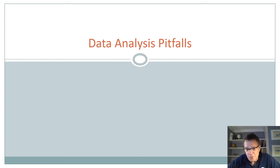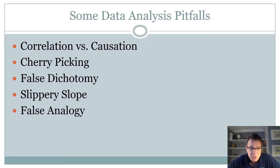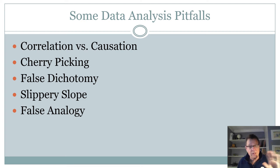We have an obligation to give people information and insights that allow them to make decisions from an honest and objective perspective. I see too often people trying to use data to manipulate things to get the answer they want, which may be misleading at best or deceptive at worst — and sometimes they don't even realize they're doing it. There are several common data analysis pitfalls: correlation versus causation, cherry picking, false dichotomy, slippery slope, and false analogy. A key component to be aware of is cognitive bias.